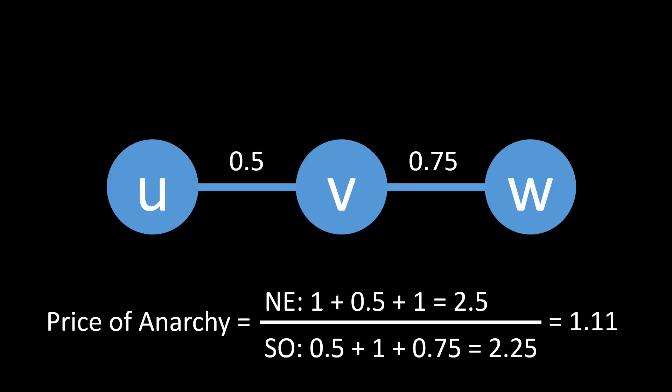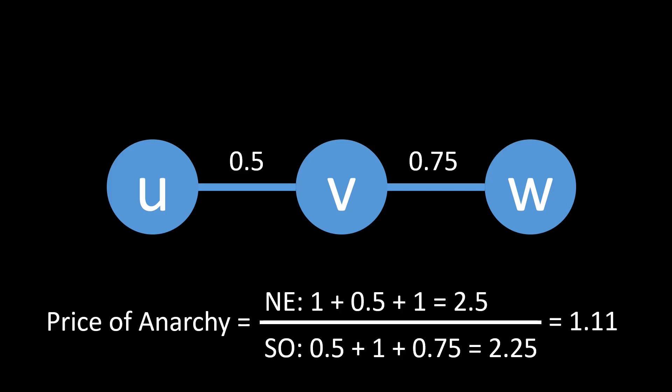However, if you can freely choose the network and the distances of the edges in the network, how bad can the price of anarchy of the selfish caching game get? Can you make the price of anarchy as high as 2, or even higher? What is the largest number you can achieve? Please pause the video and think about this.